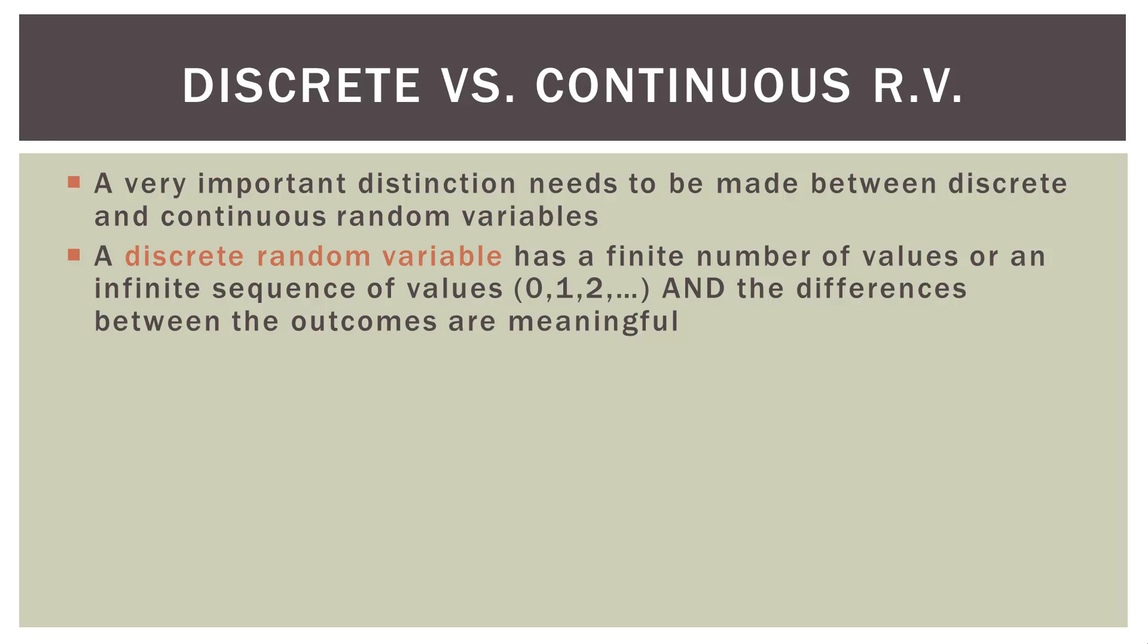So a discrete random variable has a finite number of values or an infinite sequence of values, like 0, 1, 2, 3, and so forth. And the differences between the outcomes are meaningful. So our die throw can only have an outcome of 1, 2, 3, 4, 5, or 6. So that's what we mean by a finite number of values. And each is meaningful. So throwing a 4 on a die is definitely different and meaningful than throwing a 1.